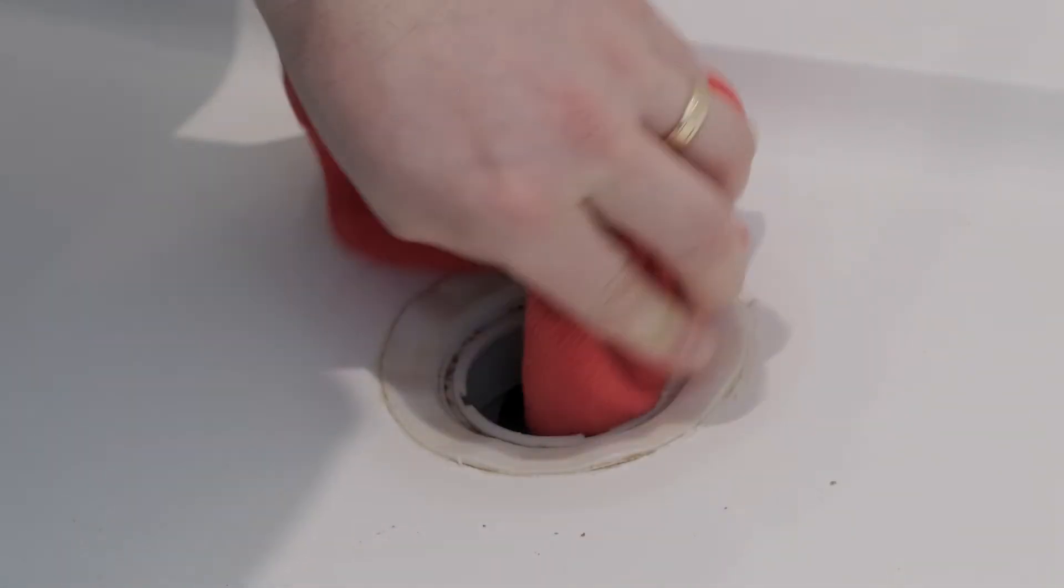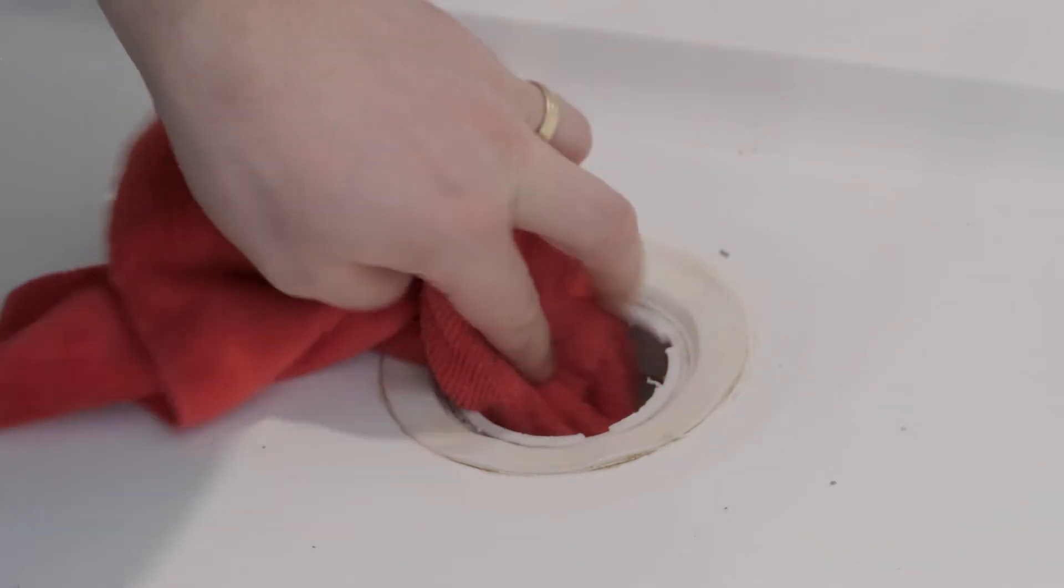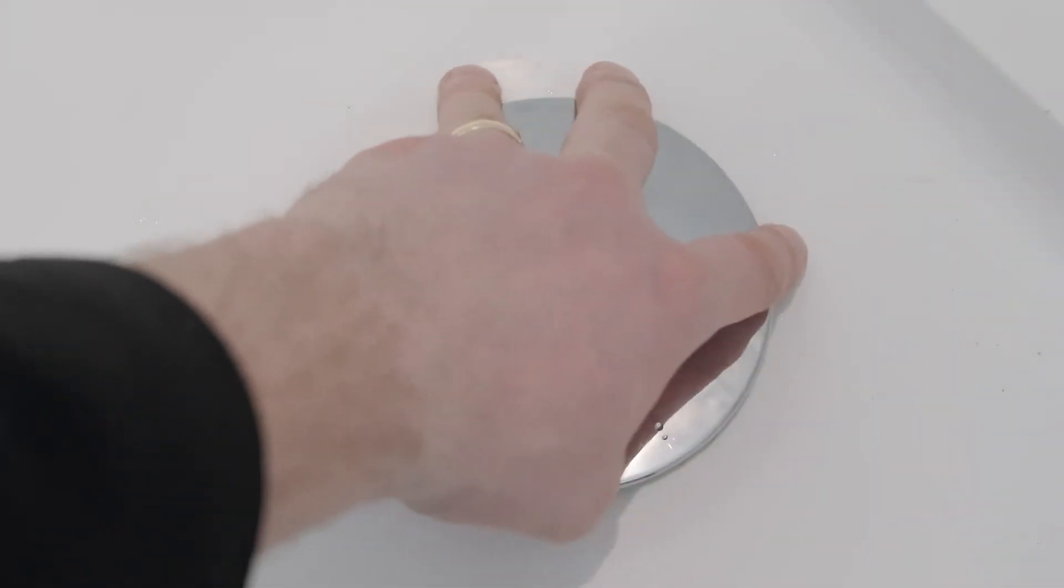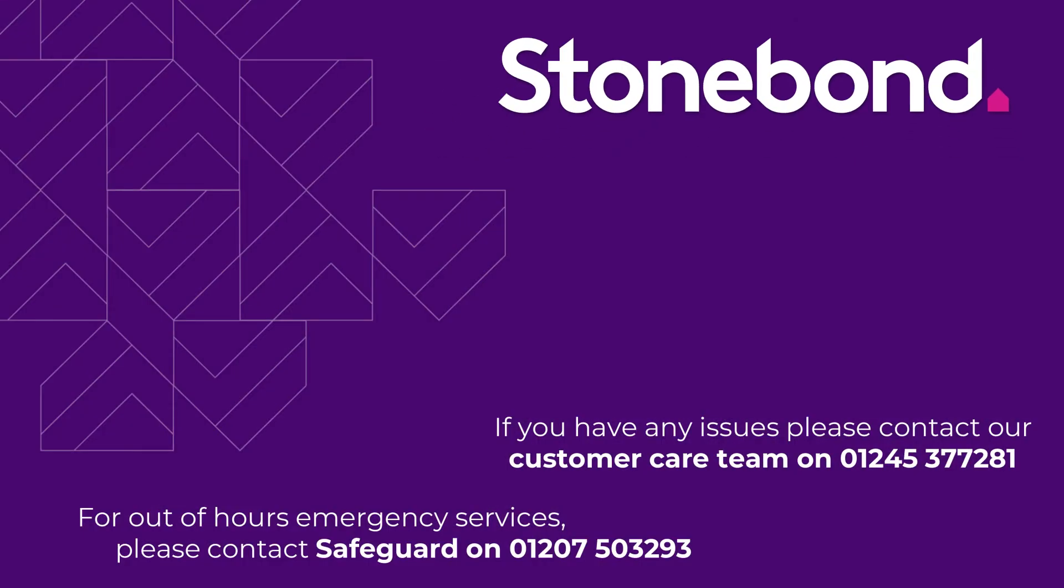With the cover and container removed, you can clean inside the trap. To replace the container and cover, simply push back in and twist.